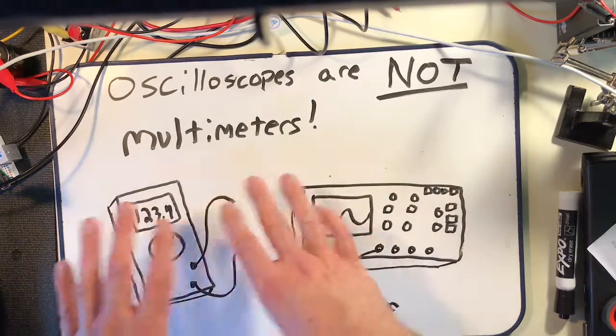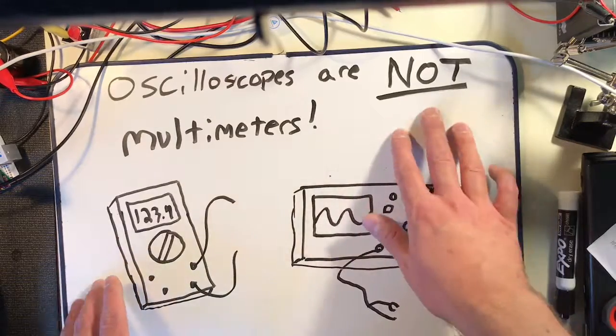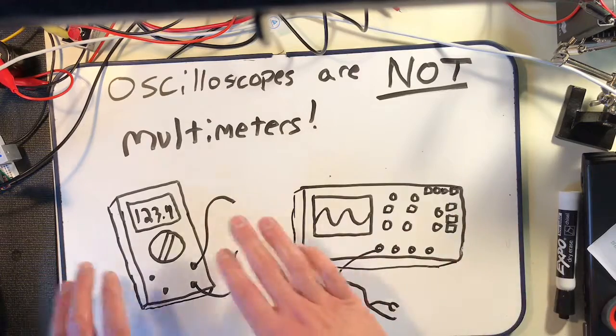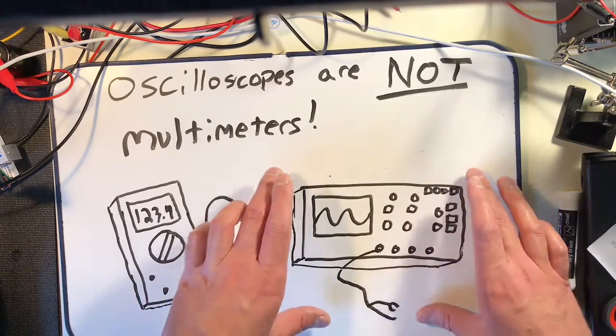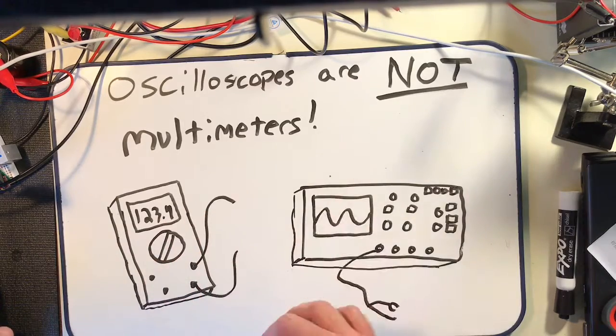A very important rule: there are some common misconceptions about oscilloscopes and multimeters, and some of those can be rather dangerous. The very first one is that oscilloscopes are absolutely not multimeters. Even though they can operate in similar functions, they both measure voltage, oscilloscopes measure voltage over time, they internally operate very differently.